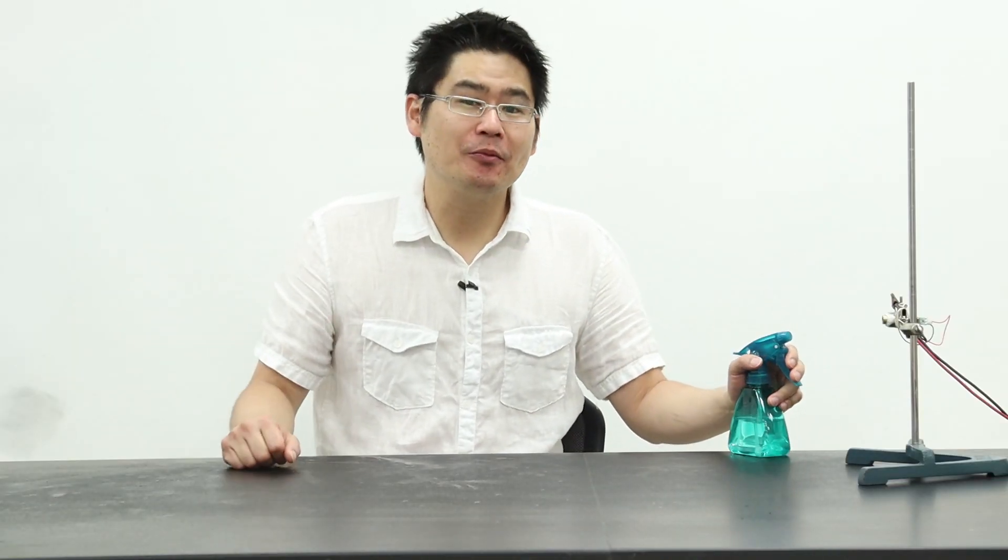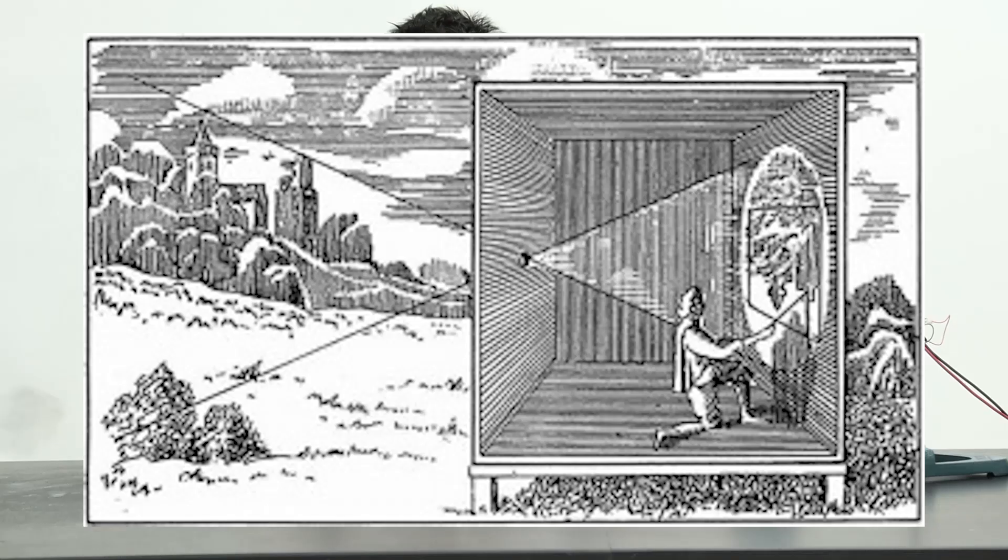This property of light was well known back in the 16th century where they'd punch a hole in one of the walls in a dark room and an image of the outside world would be projected on the opposite side.